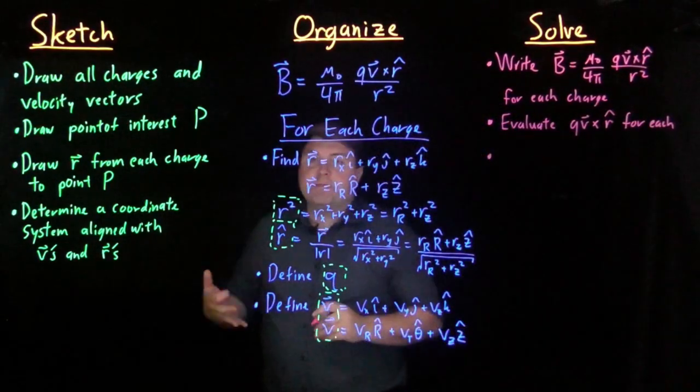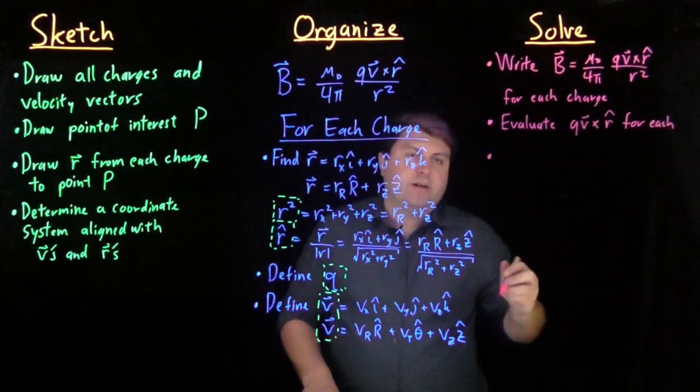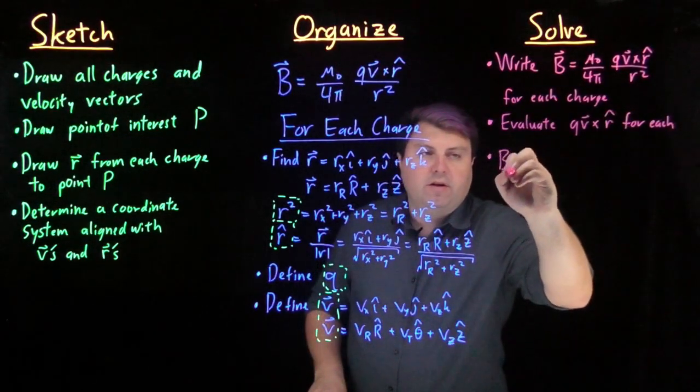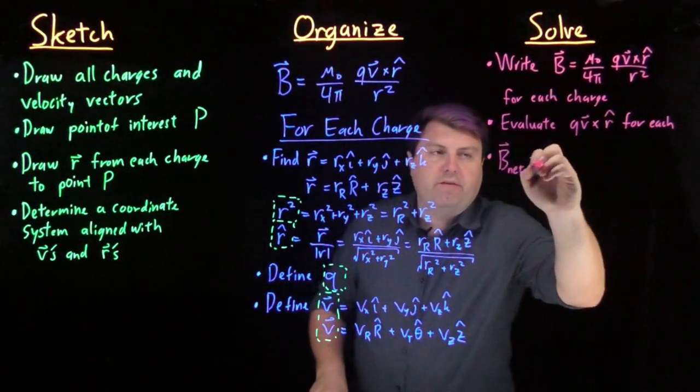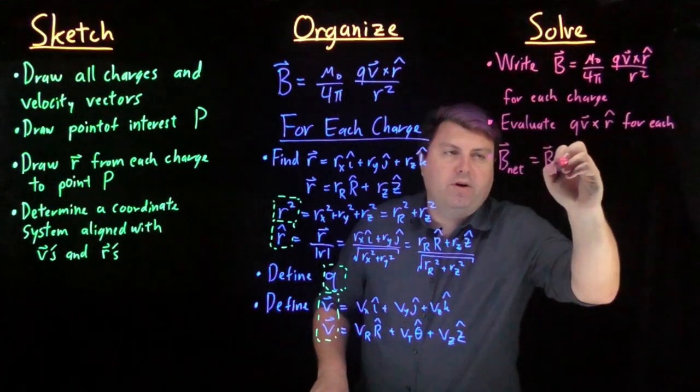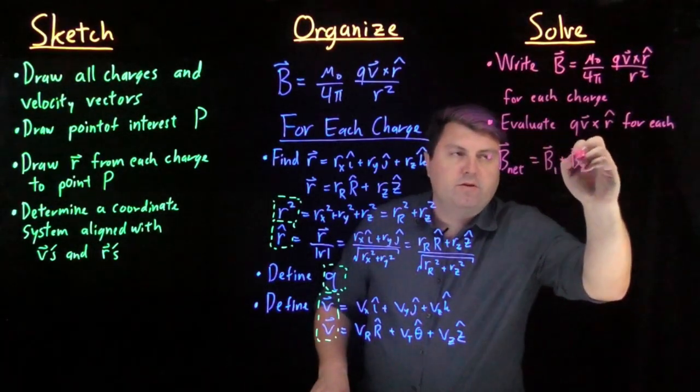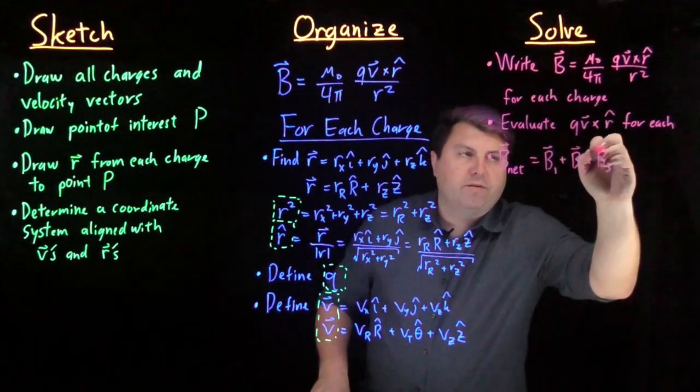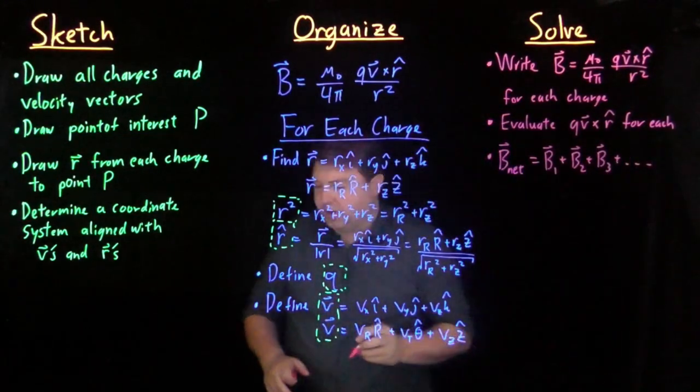And our magnetic field sums up with superposition just the same as our electric field. So we have the net magnetic field is equal to the magnetic field of one plus the magnetic field of two plus the magnetic field of three and however many charges that we have.